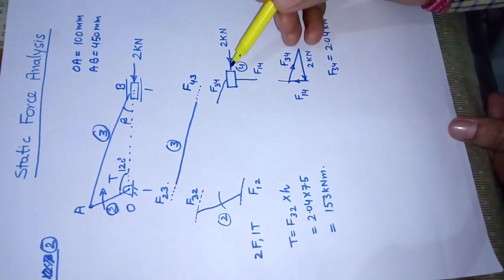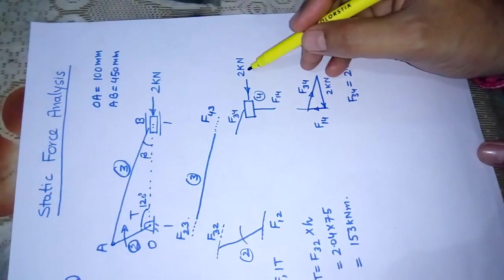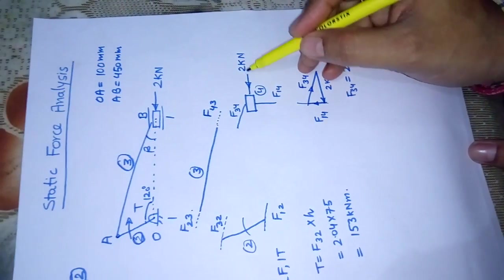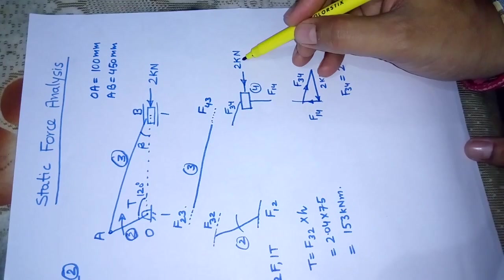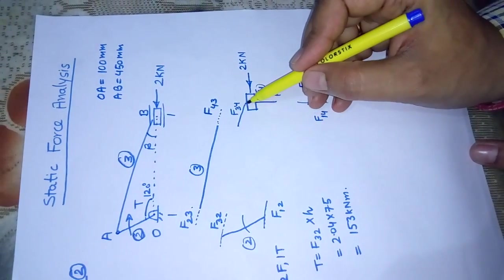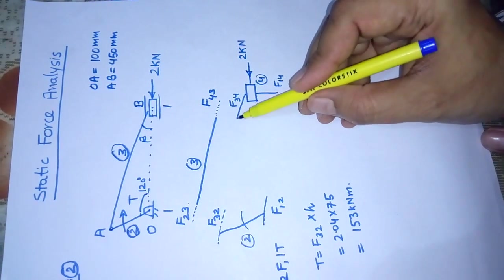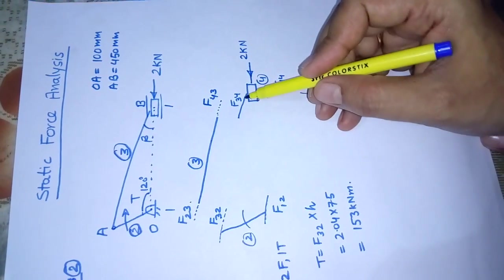So we will go to the known forces link, which is link number 4. Link number 4 has four forces. One is acting along the piston, the external force given to us. One force is coming on link 4 because of link 3, acting along link 3.